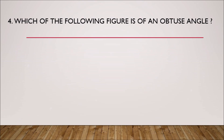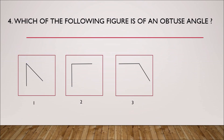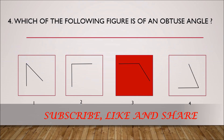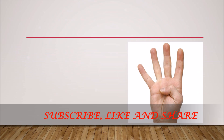Which of the following figures shows an obtuse angle? First figure, second figure, third figure, fourth figure. The first and fourth figures are both acute angles. The second figure is 90 degrees, which is a right angle. The third figure is an obtuse angle, so the third figure is correct.